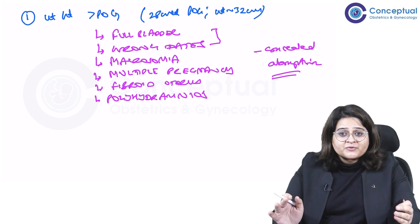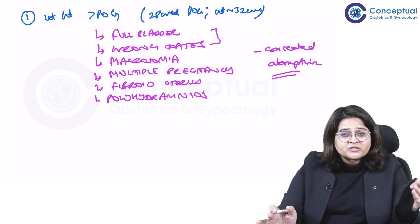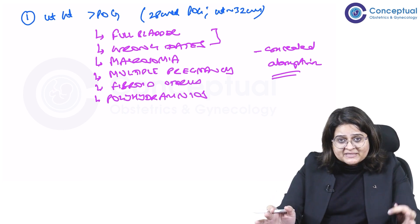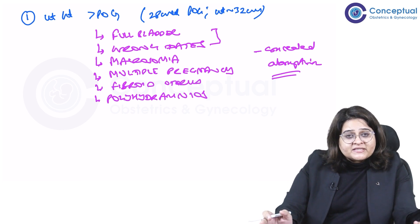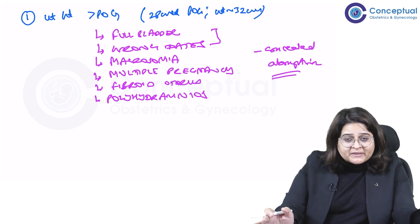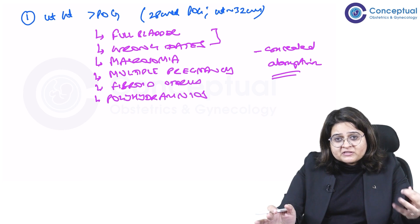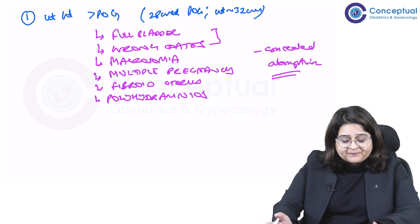But yes, it might be a concealed abruption. What is a concealed abruption? Abruption is premature separation of the placenta, and it could be concealed where the blood is all piling up behind the placenta, or it could be revealed where she's having active bleeding.